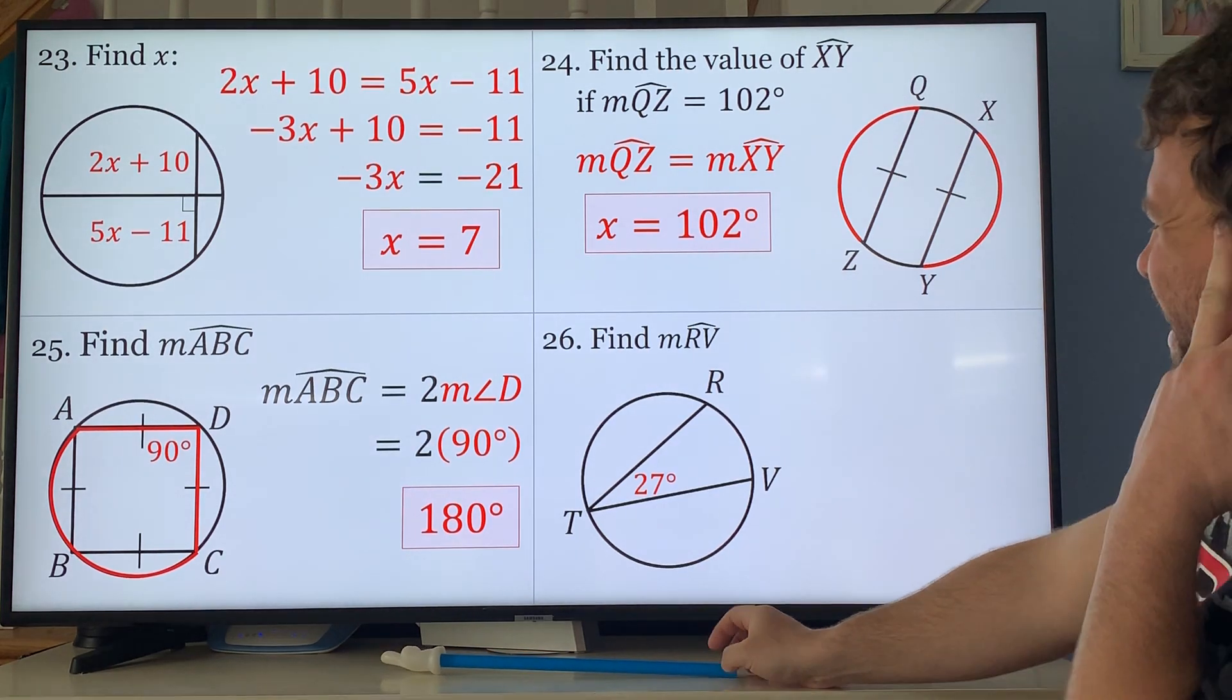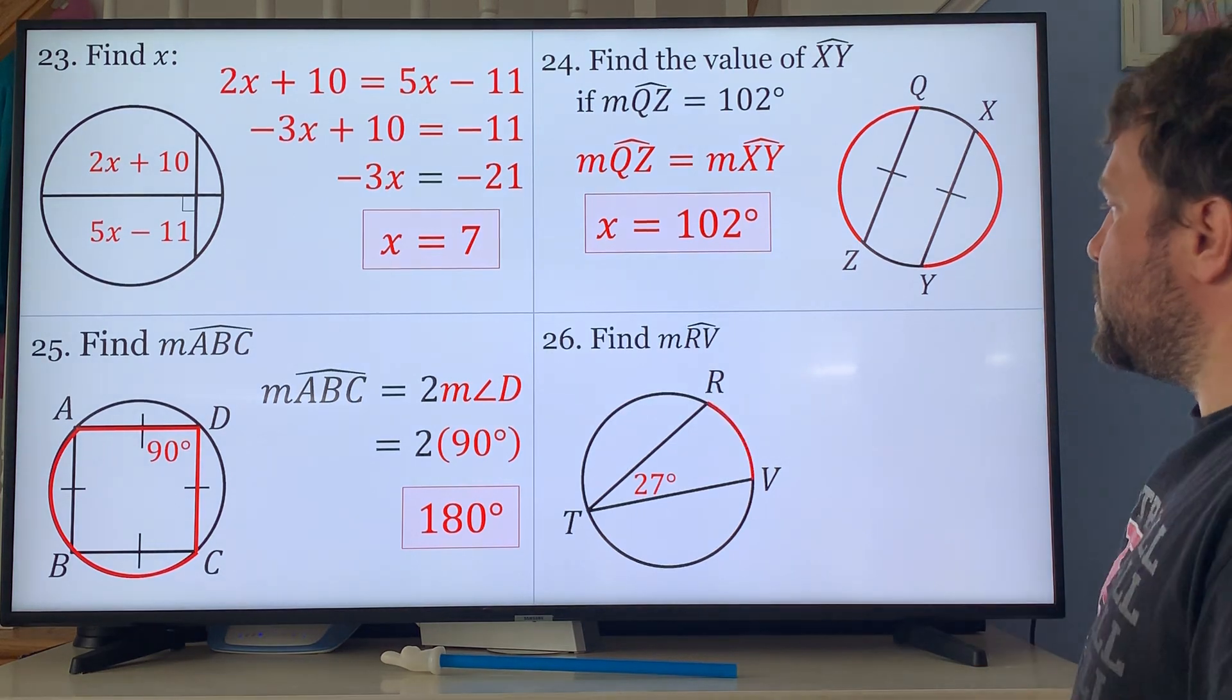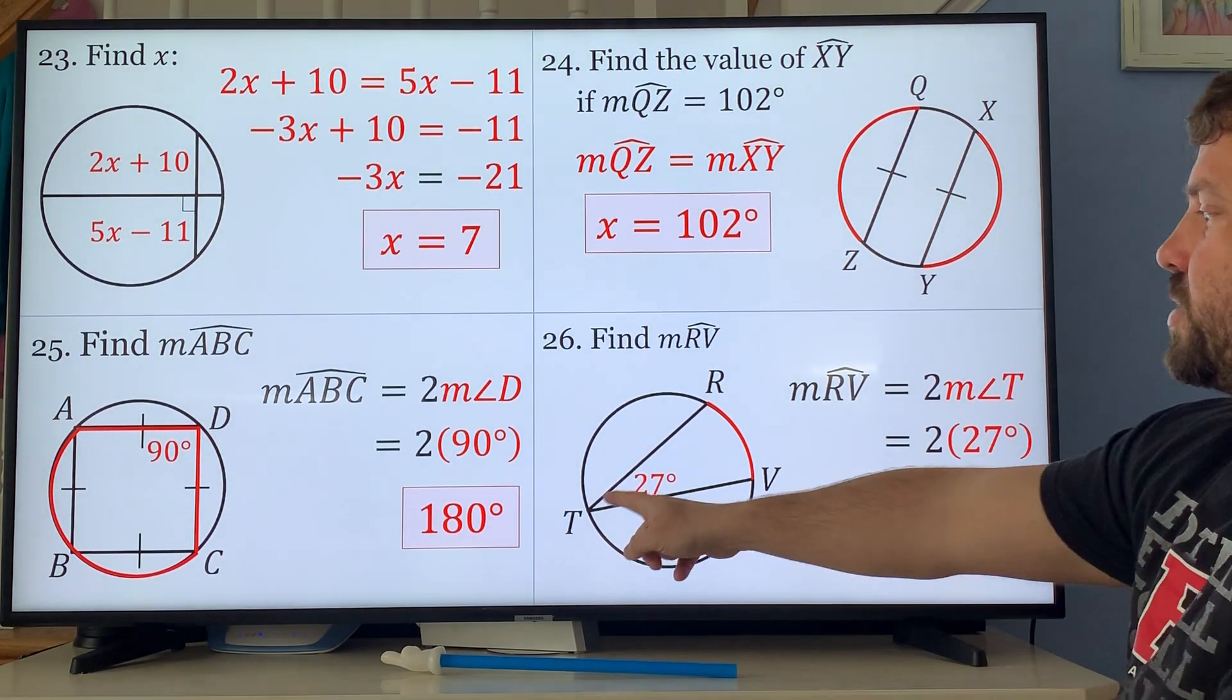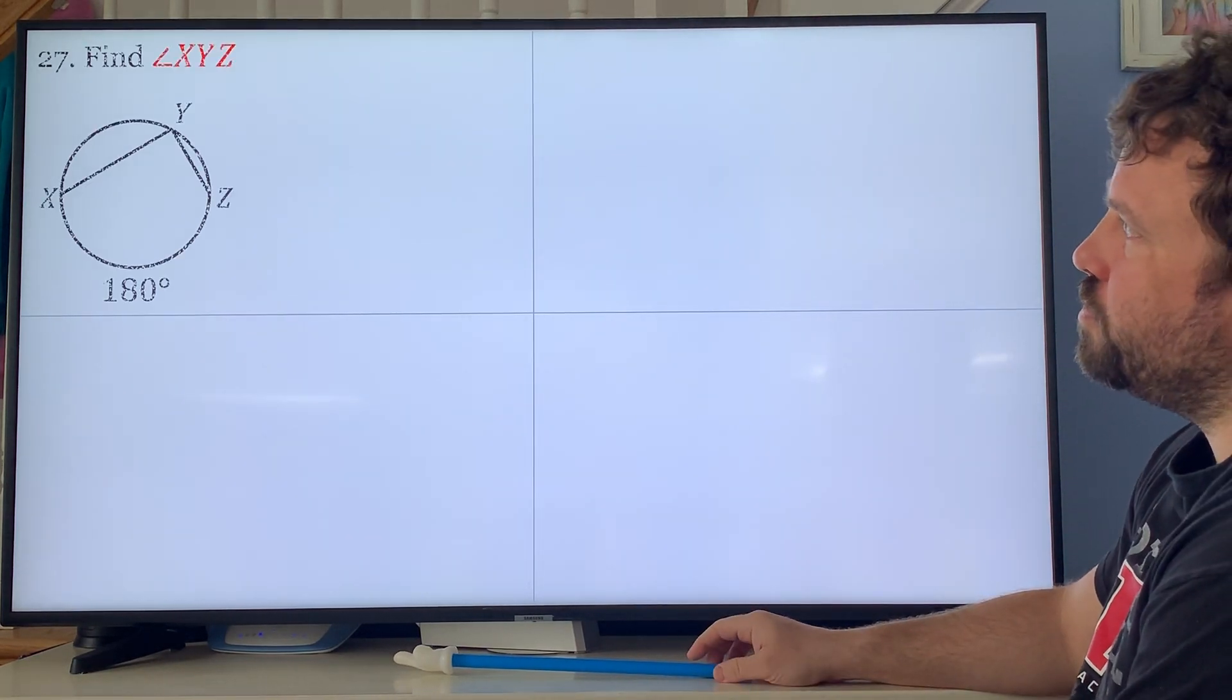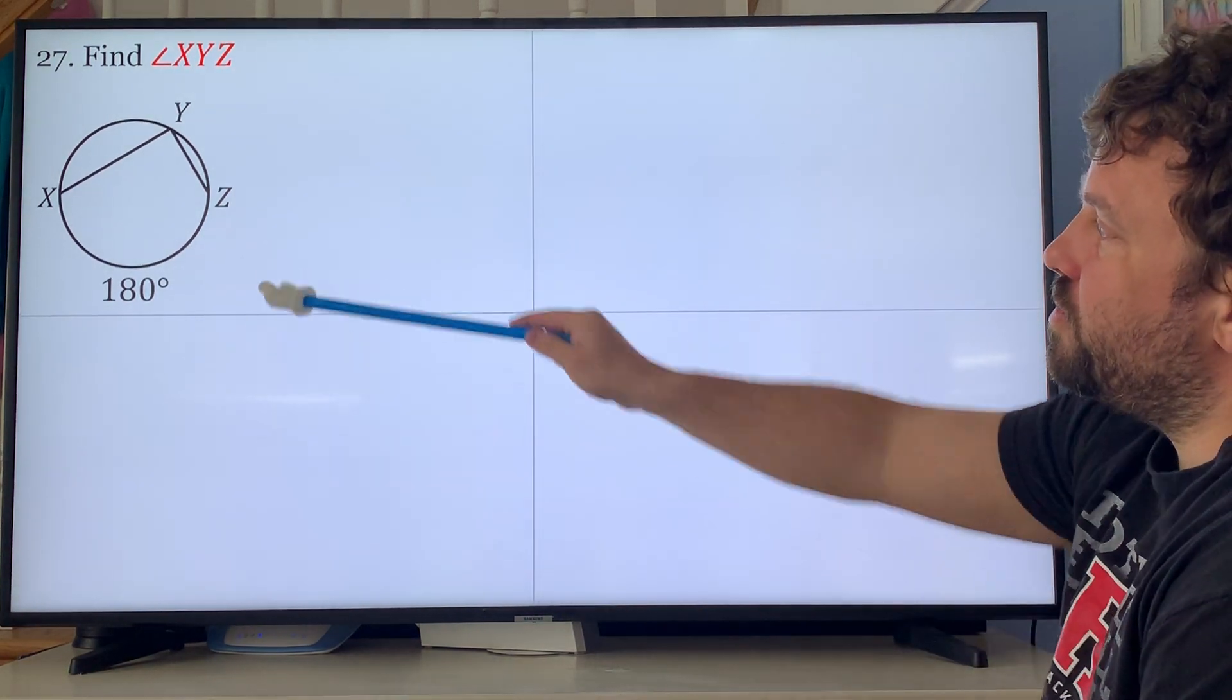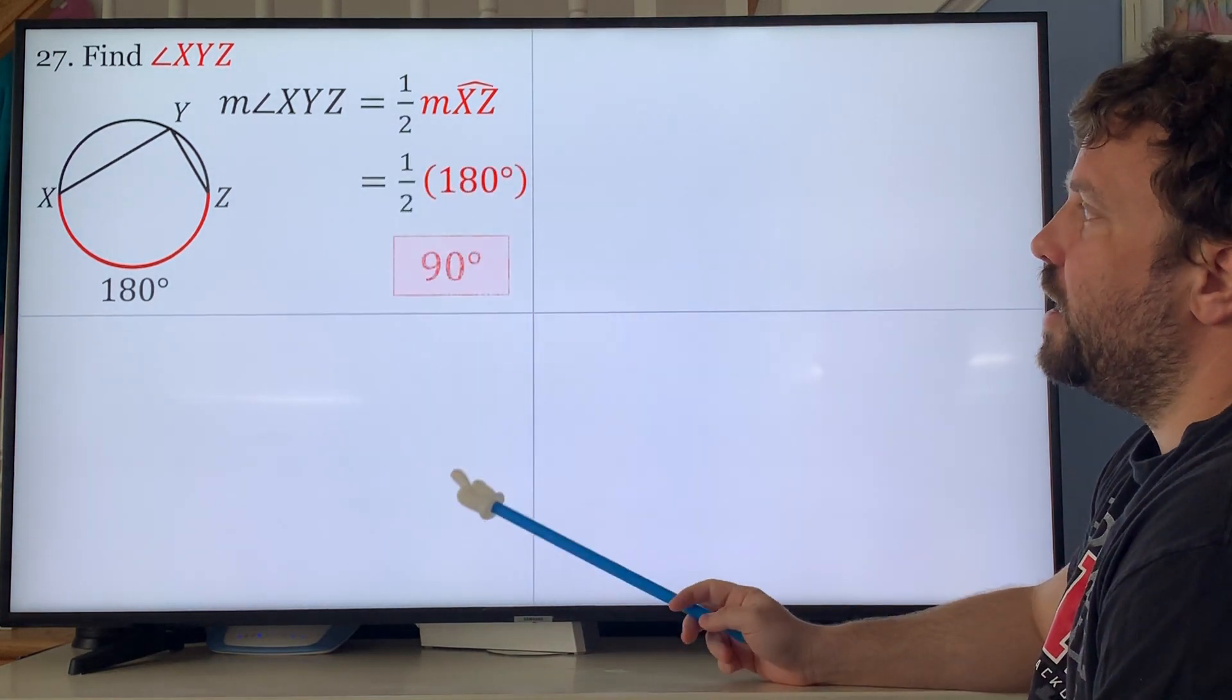Problem 26: find the measure of RV. Inscribed arc is two times the inscribed angle, so it's just two times 27 which gives you 54. Inscribed angle is half the inscribed arc. So the arc is 180, I have to find the inscribed angle, half of 180 is indeed 90.